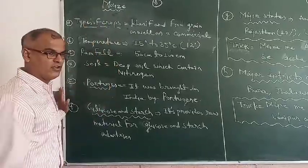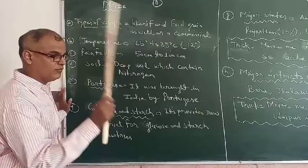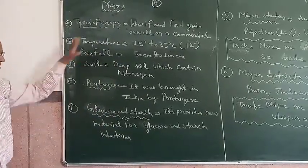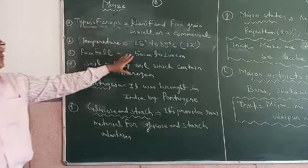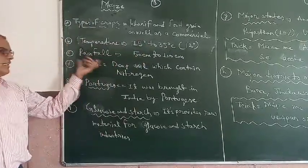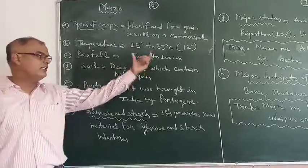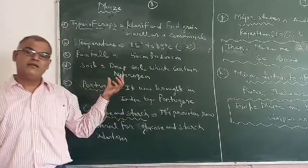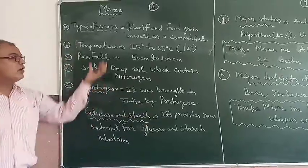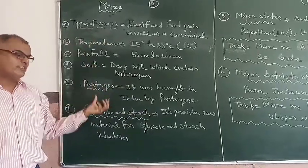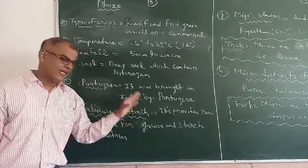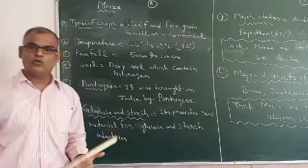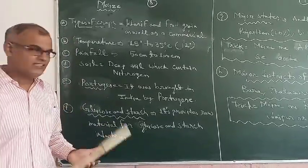To recap the major points of Maize crops: it is a food grain crop as well as a commercial crop. It requires temperature 15 to 35 degrees Celsius, rainfall 15 cm to 100 cm, and deep soil containing nitrogen. This crop was brought to India by the Portuguese in the 17th century and provides raw material to the glucose industry and starch industry.